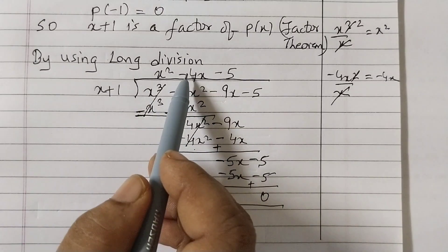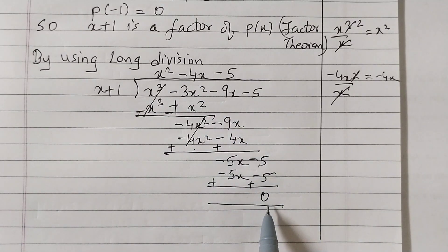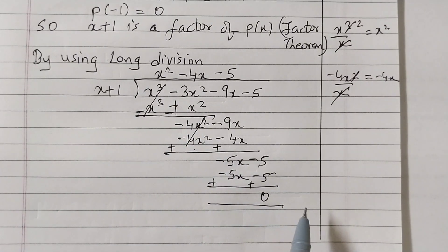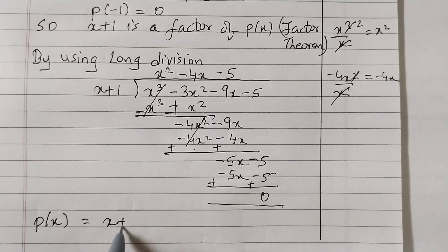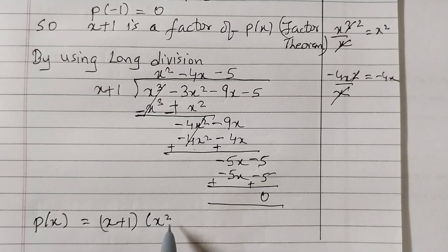So this is the divisor, this is the quotient, and this is the remainder. And we know that dividend is equal to divisor into quotient plus remainder. Remainder is 0, so we can ignore it. P of x equals to x plus 1 and the other factor is the quotient: x squared minus 4x minus 5.